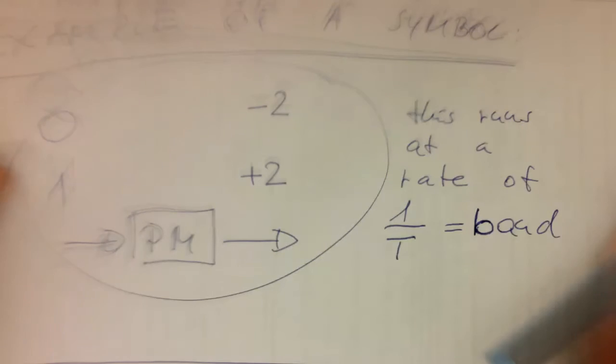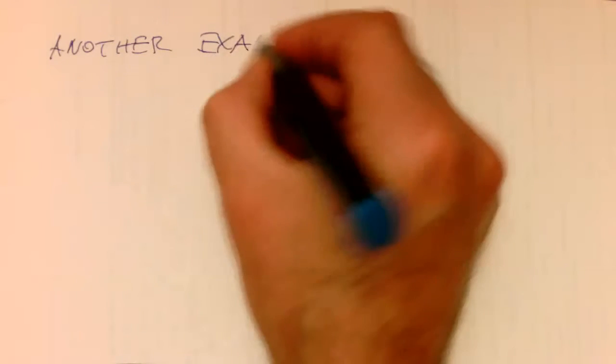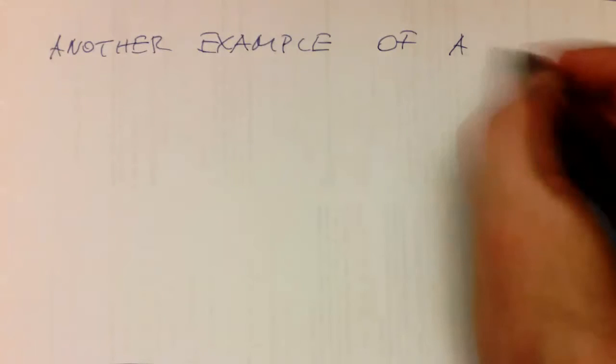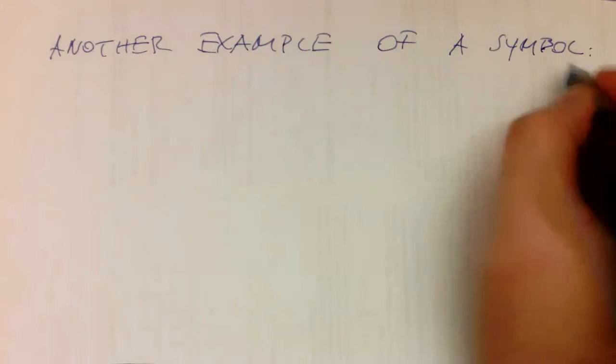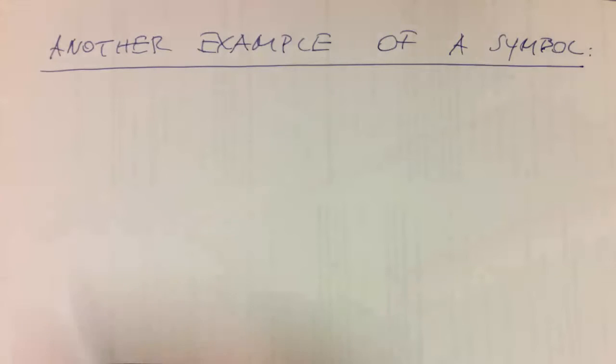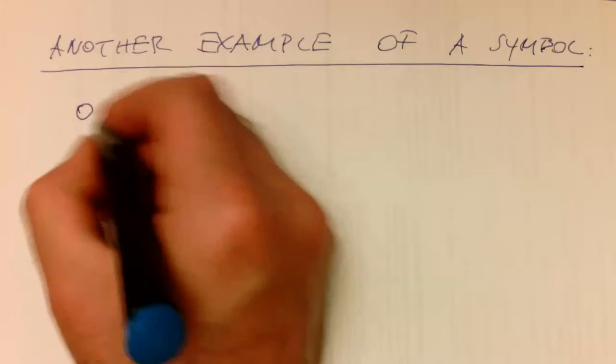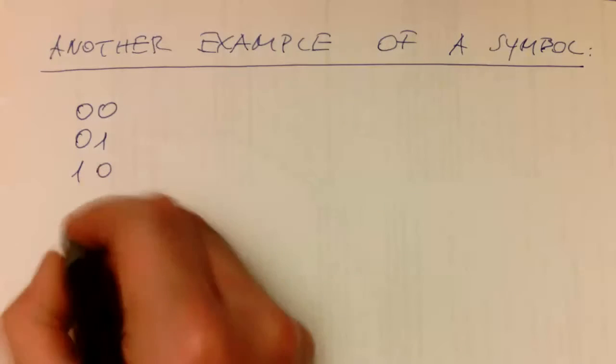If we look at another example of a symbol, let's say we take two bits. So we have 00, 01, 10, and 11.